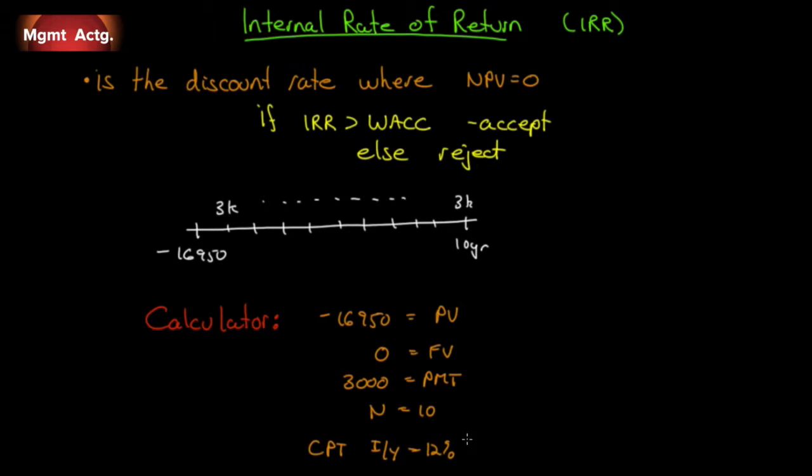So the internal rate of return is 12%. If our weighted average cost of capital is say 10%, we would accept. If our weighted average cost of capital is 15%, we would reject.